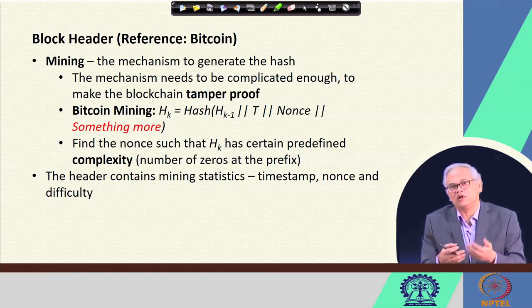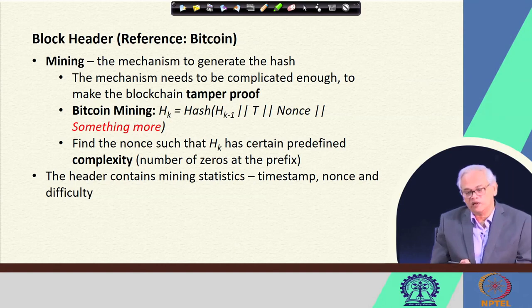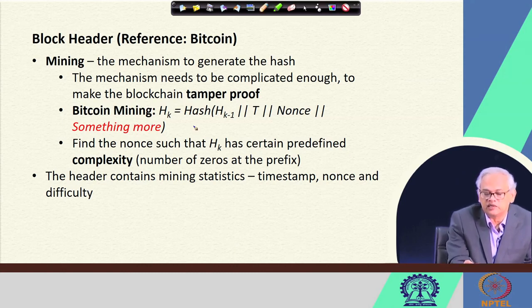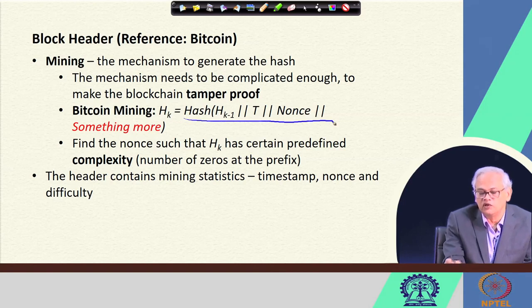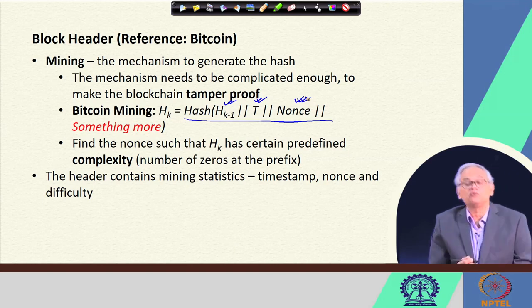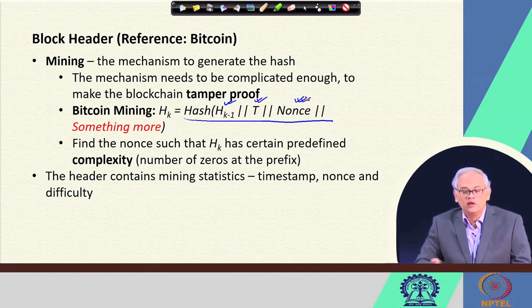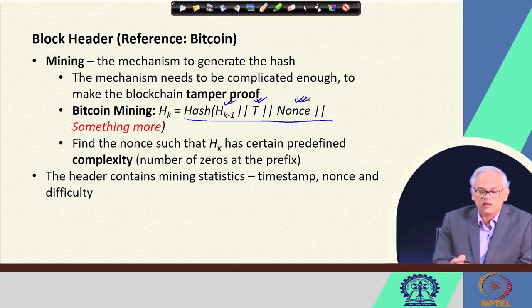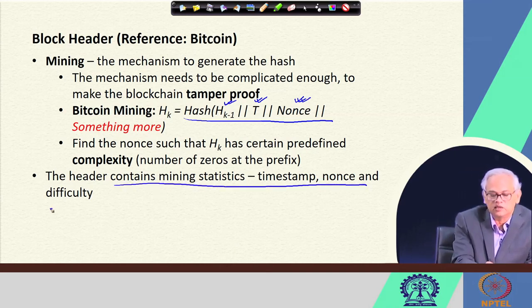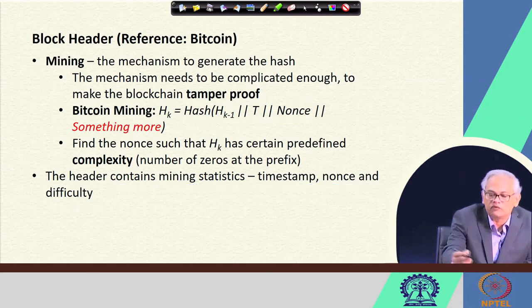How many leading zeros are required is specified in the block header itself. The mechanism needs to be complicated enough to make the blockchain tamper-proof. Bitcoin mining generates a hash using: the previous block hash (h_{k-1}), a timestamp, the nonce that one has to find, and other components. The problem is to find the nonce such that h_k has a certain predefined complexity in terms of number of leading zeros. Mining statistics are also part of computing the current block's hash.